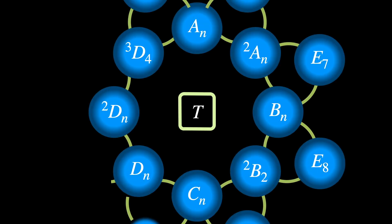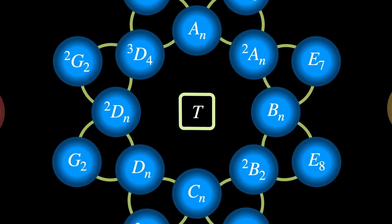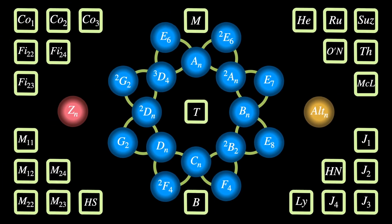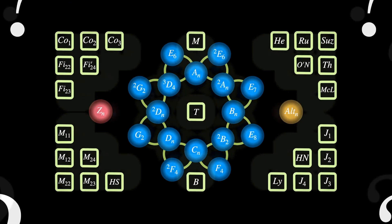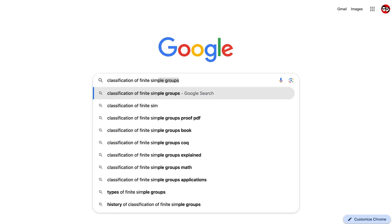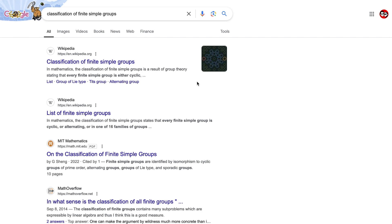Finite groups and their structures have been studied extensively in the last 200 years. Despite all the effort, mathematicians are still unable to describe them all. But in 2004, one of the most important breakthroughs in mathematics was made: the classification project — a complete classification of all finite simple groups.